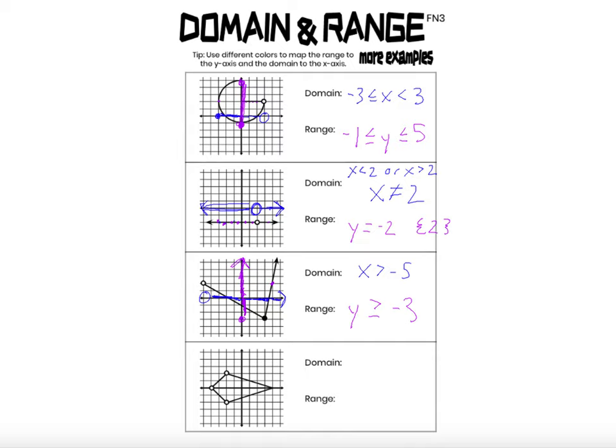Final example. I'm going to change this graph — I did it differently in different classes. For this version, I'm going to have open dot, open dot, closed dot, closed dot. I'll talk about why I'm changing one to a closed dot in a second. Given this change, let's look at what the domain is.